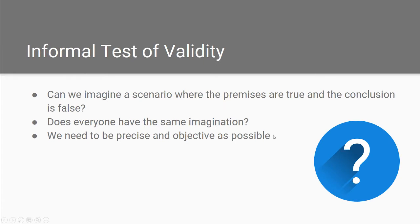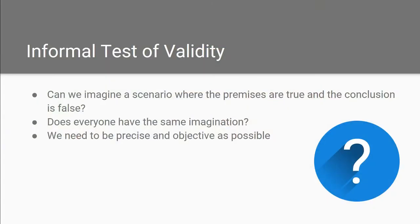I want to begin by revisiting the informal test of validity. Can you imagine a scenario where the premises are true and the conclusion is false? Recall what we said about validity: for an argument to be valid, the conclusion has to logically follow from its premises. Take for instance: all humans are mortal; Socrates is a man; therefore Socrates is mortal. It's a valid argument because the conclusion logically follows. If both premises are true, and we can back them up with evidence, then the conclusion must be true — we can't have a valid argument where the premises are true and yet the conclusion is false.